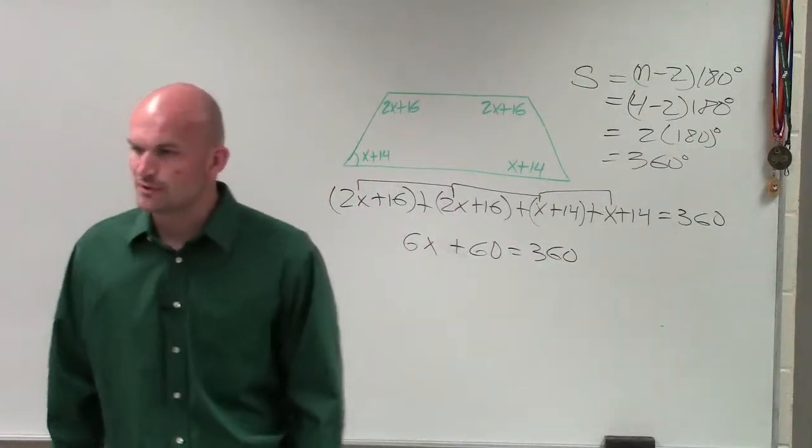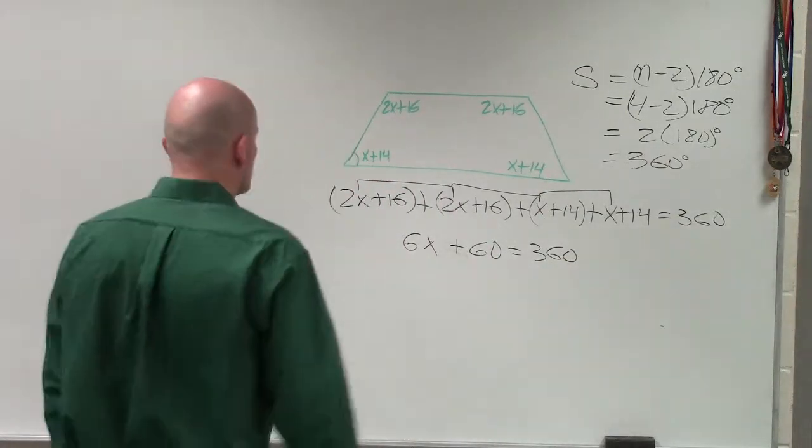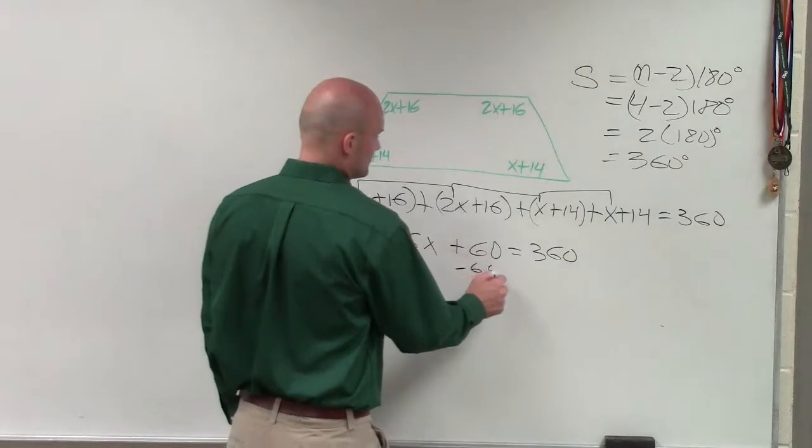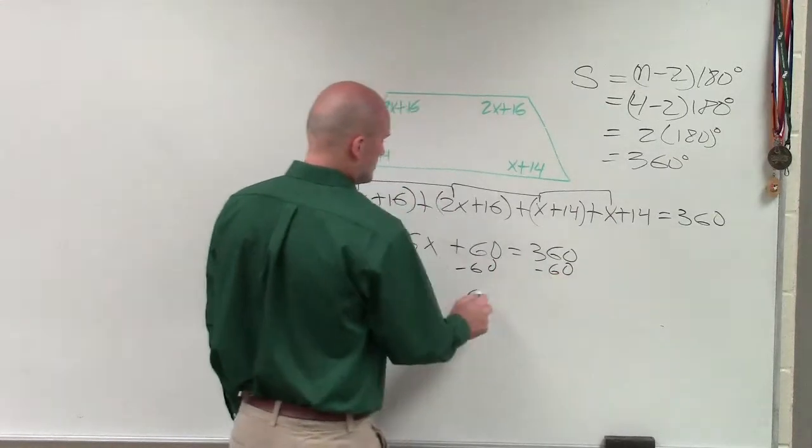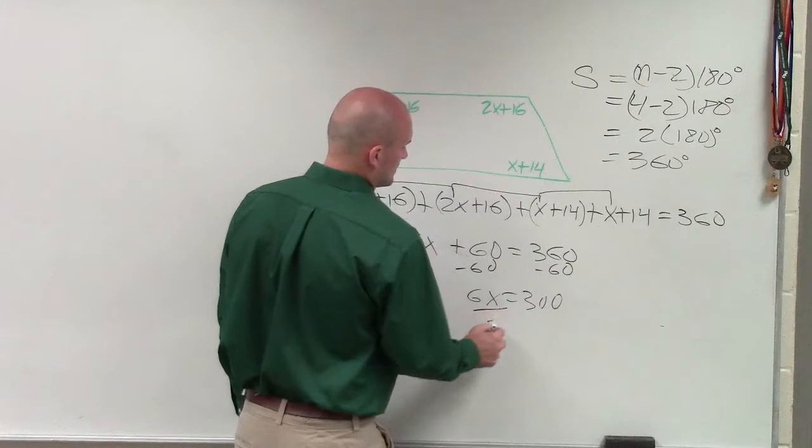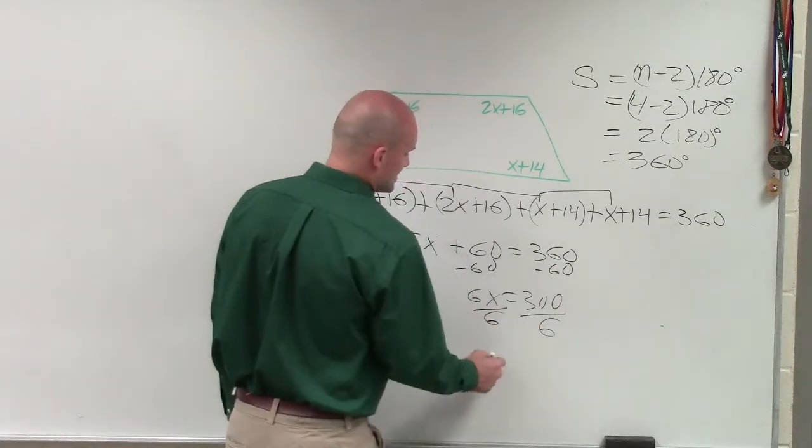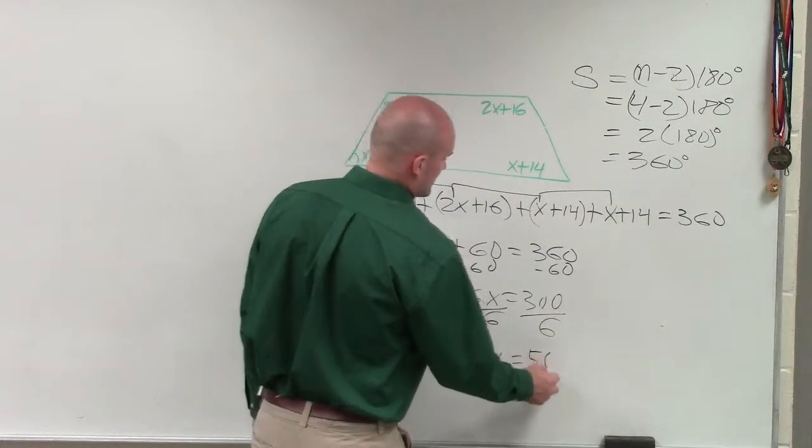Now, ladies and gentlemen, we have a two-step equation we can solve. So I subtract 60. 6x equals 300. Divide by 6, and x equals 50.